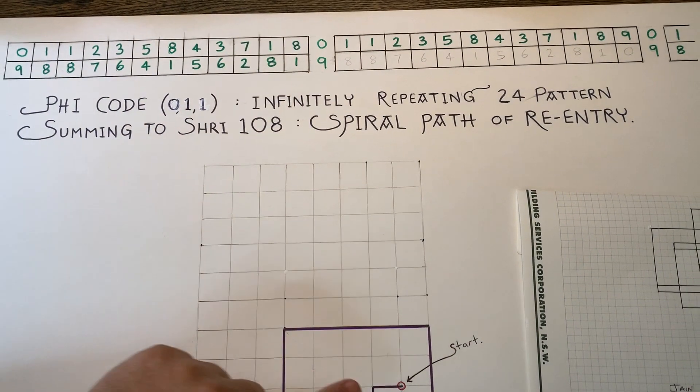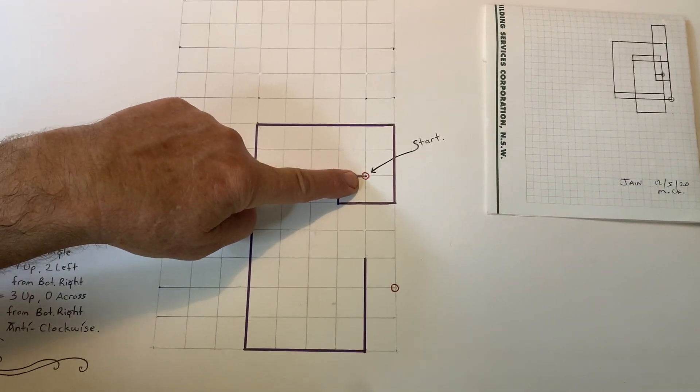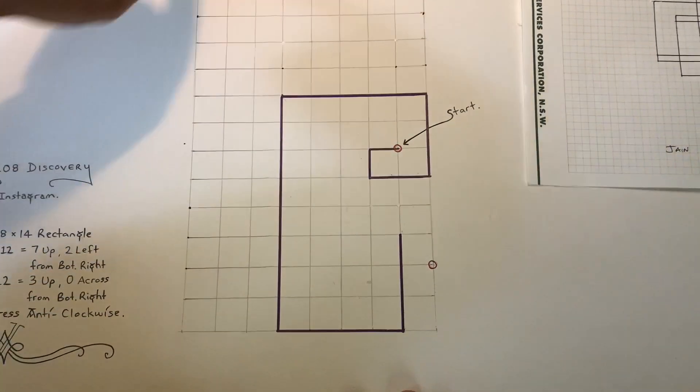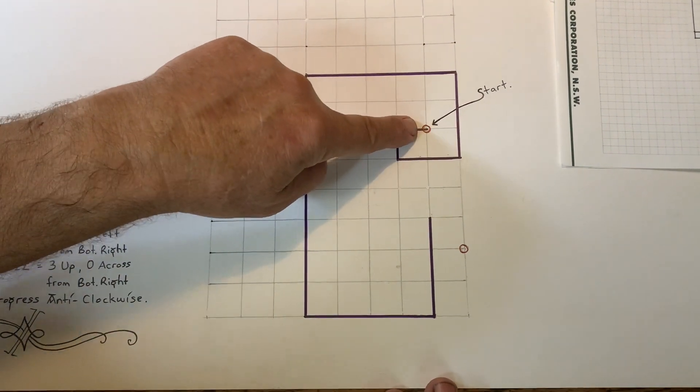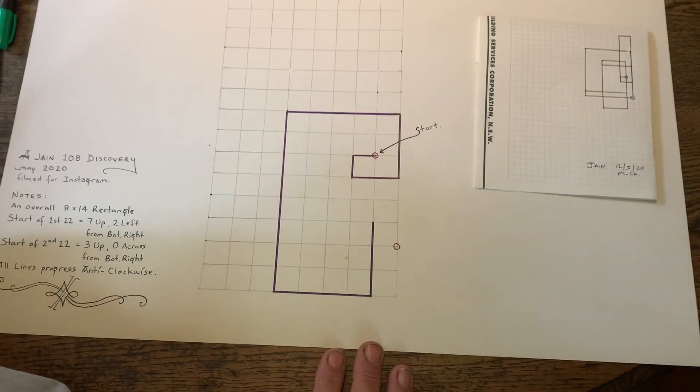So it begins at this point here, we're going to start the Fibonacci sequence at this point. And after 24 steps, it's going to come back to itself. That's why it's called a re-entry. It's quite a cosmic dance of numbers.